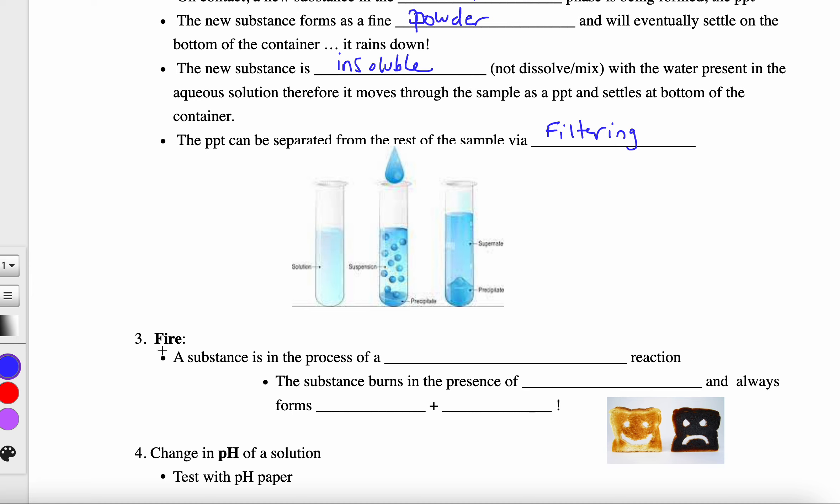Probably a favorite is fire. If we see a sample in the lab on fire, which I hope we don't, but if we do, it means that sample is in the process of a combustion reaction. That's just a fancy term for it's burning. That substance doesn't burn unless it's in the presence of oxygen.